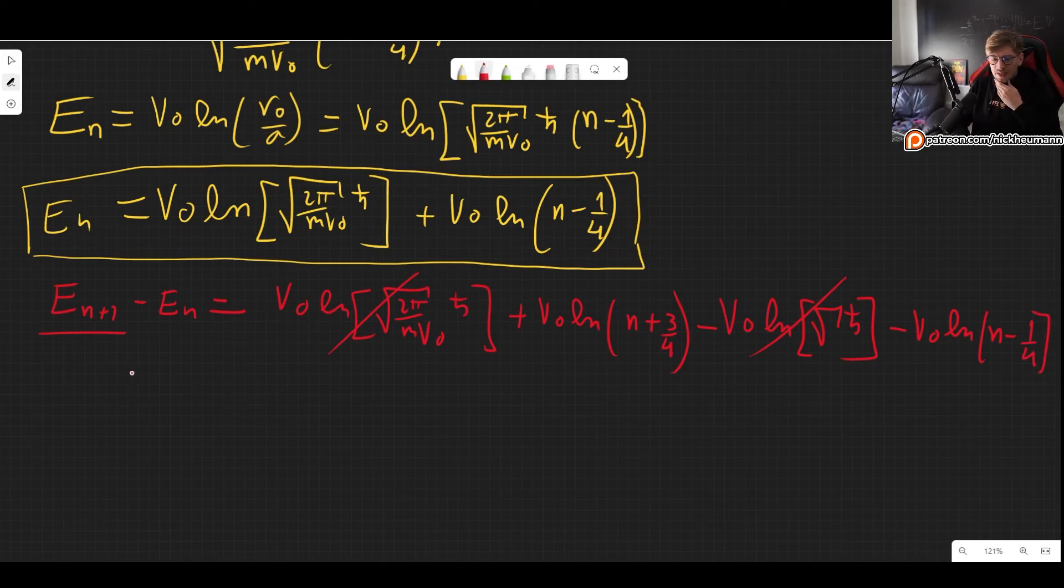And then we have minus V0 natural log of n minus one over four. And now finally we just improve our notation a little bit. What we can do is once again use properties of the logarithm to put everything together. So V0 natural log of n plus three over four divided by n minus one over four. And this is the spacing for any two energy levels in this potential.